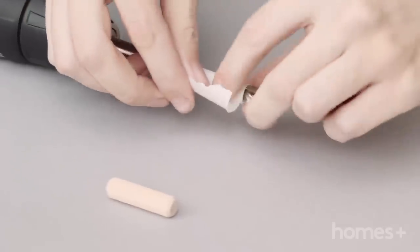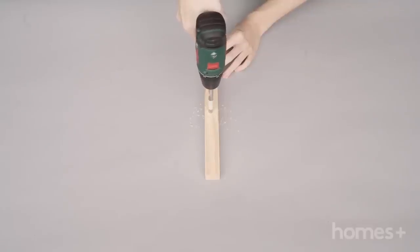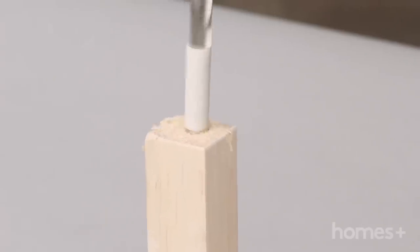Drill about just over 1cm into each of your marked points in the timber lengths. You can pop a piece of masking tape over the drill bit to ensure you don't bore in too deep.